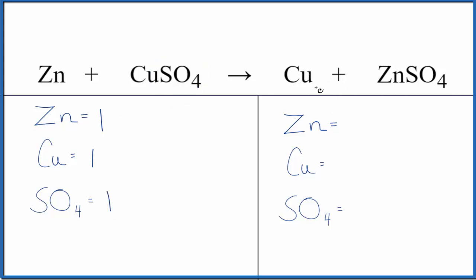Product side, we have zinc, just one of those, one copper, and then our one sulfate. And you can see that this equation, it's already balanced.